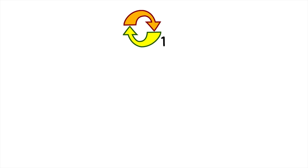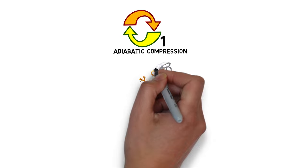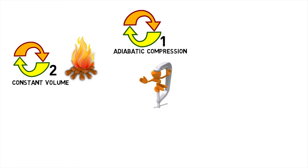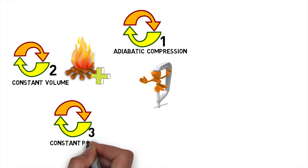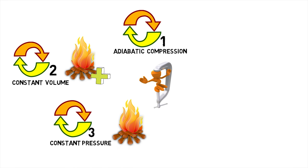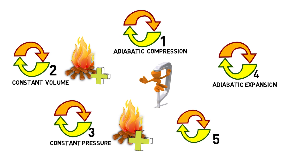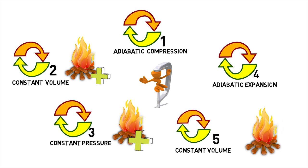It consists of the following processes. Process 1 is a reversible adiabatic compression. Process 2 is a constant volume heat addition. Process 3 is a constant pressure heat addition. Process 4 is a reversible adiabatic expansion, and Process 5 is a constant volume heat rejection.